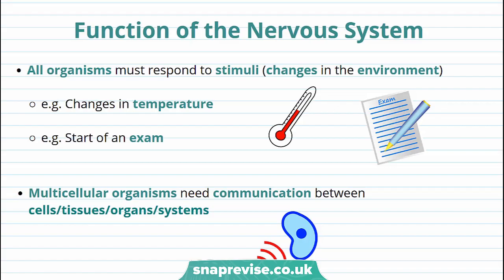The nervous system is one of the most important systems in our body. So why do we need a nervous system? Well, we have a nervous system because organisms can respond to stimuli, and stimuli just means changes in the environment. So for example,